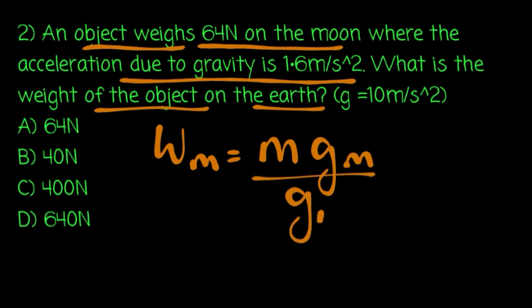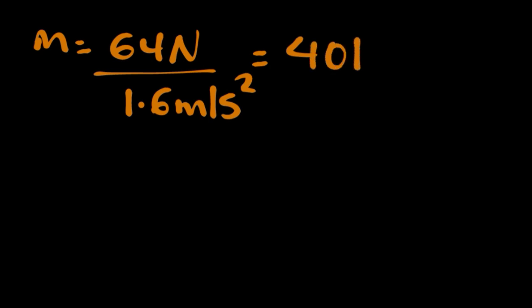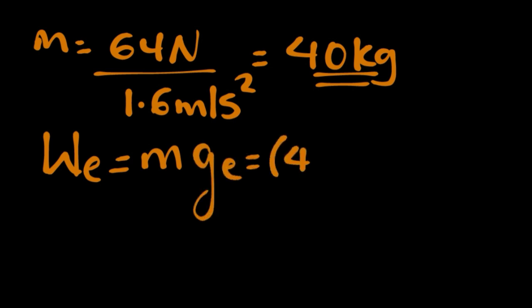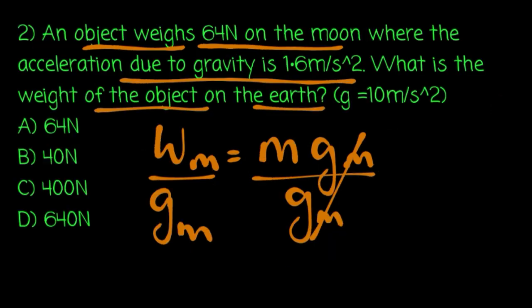To solve this: when gravity is 1.6 m per second squared on the moon, the mass is weight divided by gravity. The mass is constant — mass on the earth equals mass times gravity on the earth. Mass is 40 kg, and the earth's gravity is 10 m per second squared, giving the answer which is C.